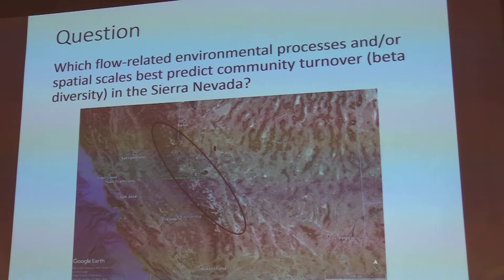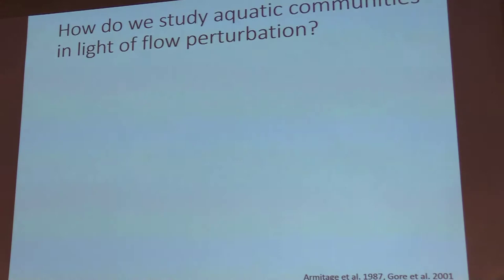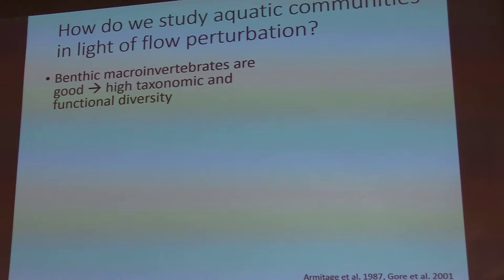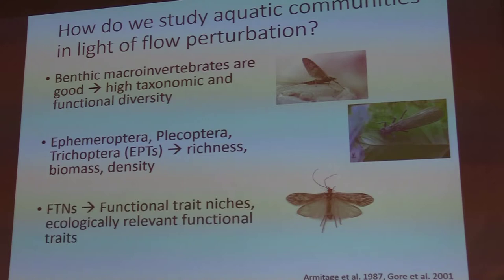The basic study question is: which flow-related environmental processes and spatial scales best predict community turnover in the Sierra Nevada? That's a lofty goal and I haven't fully answered it yet, but I'm showing some preliminary analyses. For studying aquatic communities under perturbation, BMIs are great, EPTs are useful, and functional trait niches are a great approach for examining community responses.